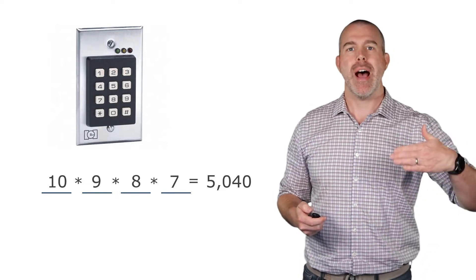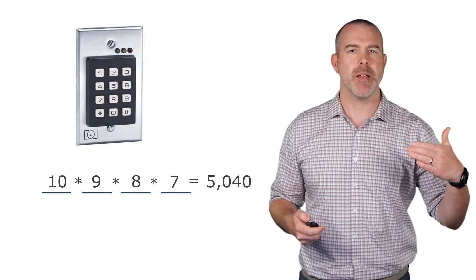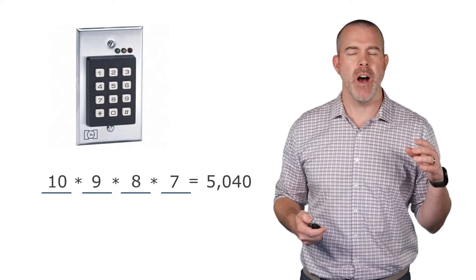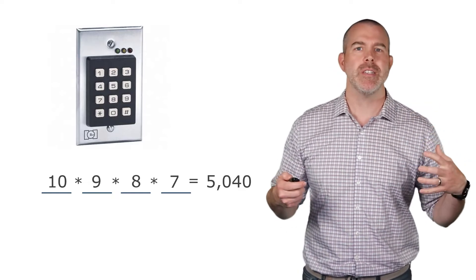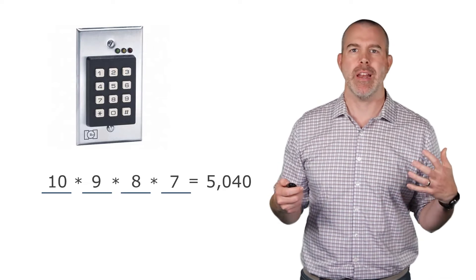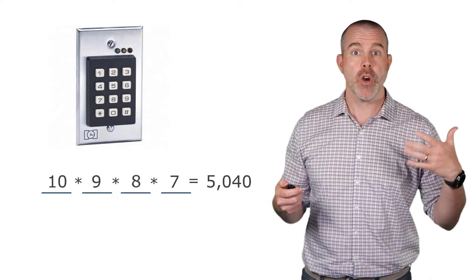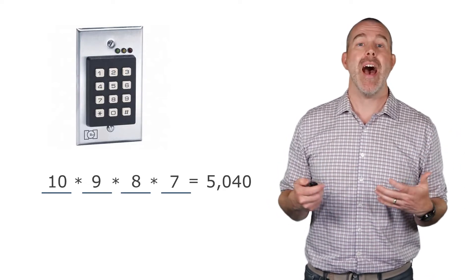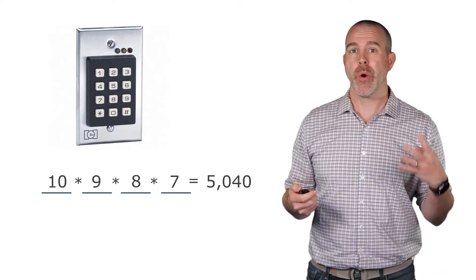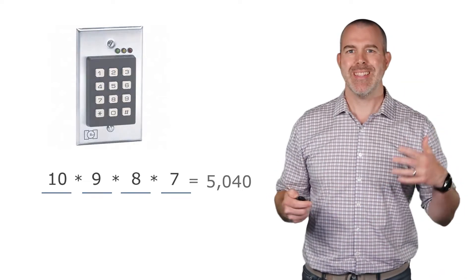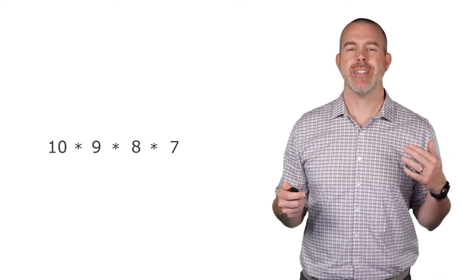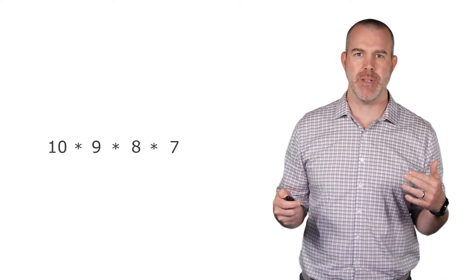Now, this process of 10 times 9 times 8 times 7 occurs often enough that there's value in developing a shorthand for it and a formula, because it does occur very frequently, where we have 10 digits in this case, and we want to order four of them. So let's dive in on these and focus on this 10 times 9 times 8 times 7 a little bit deeper.